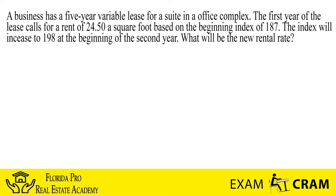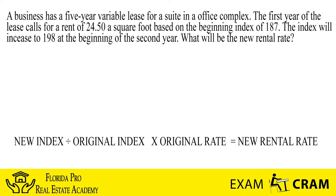All we wanna do is we wanna find out what will be the new rental rate. To do that, all we need to do is we just need to take the new index rate. You'll see the new index rate of 198, and we wanna divide that new rate by the beginning, original rate of 187. So you take the 198, divide it by the 187, and it will give you your number.